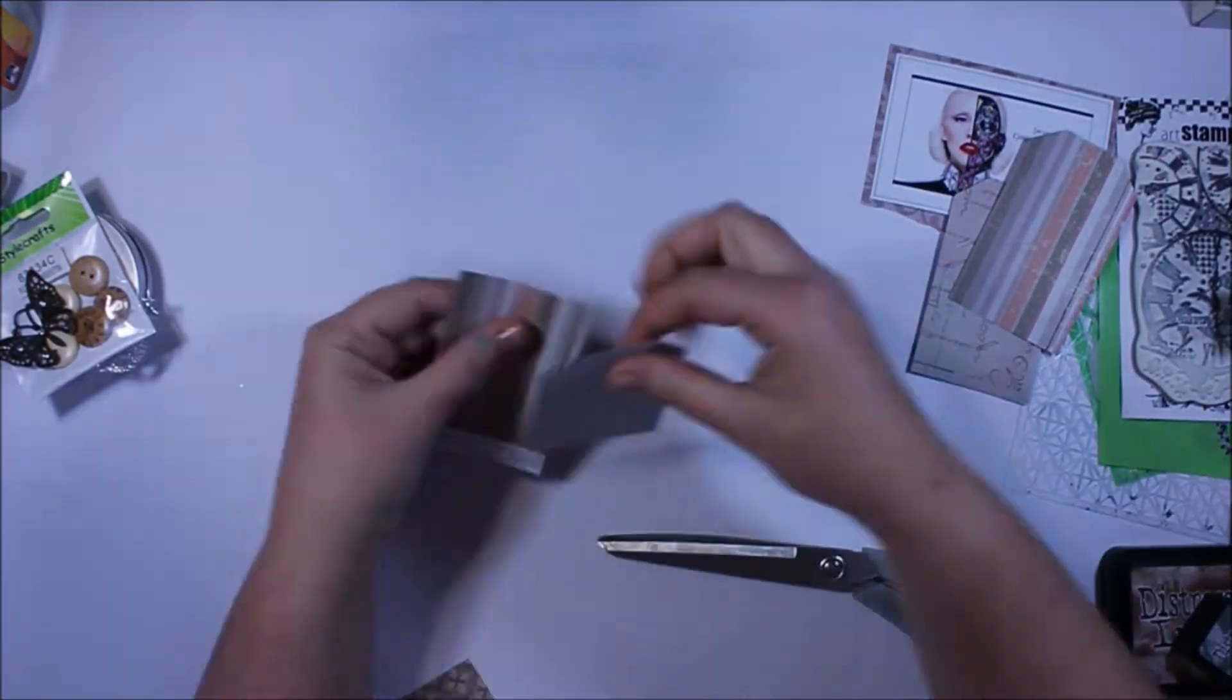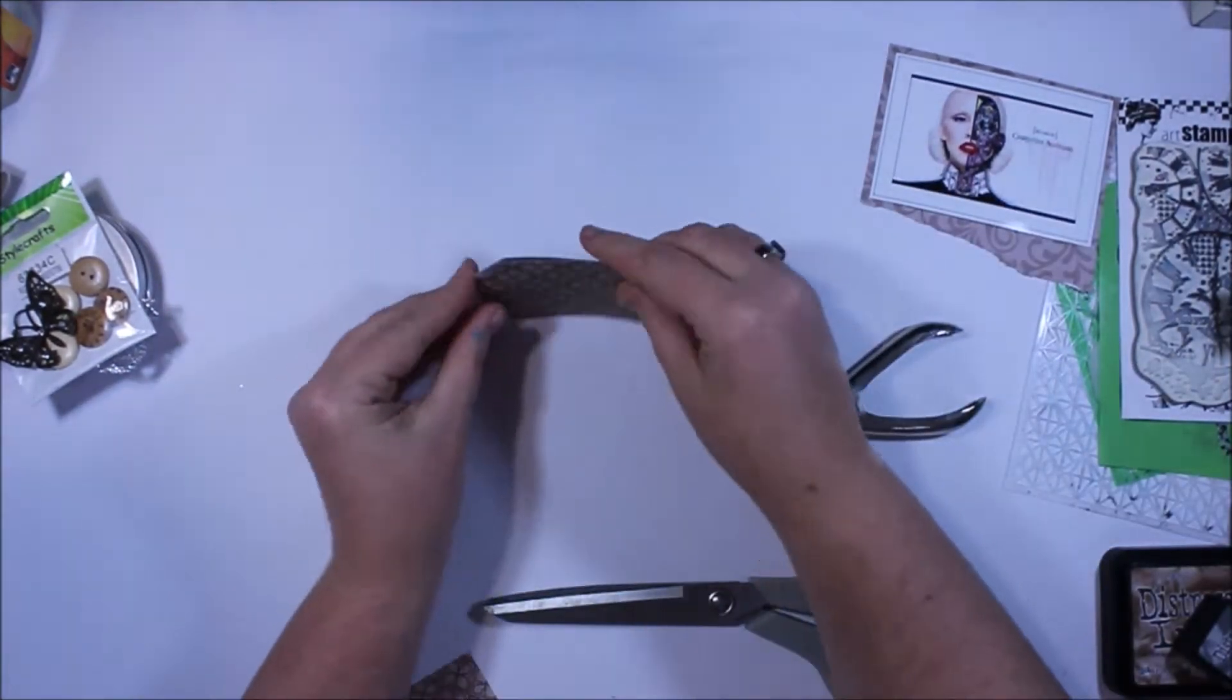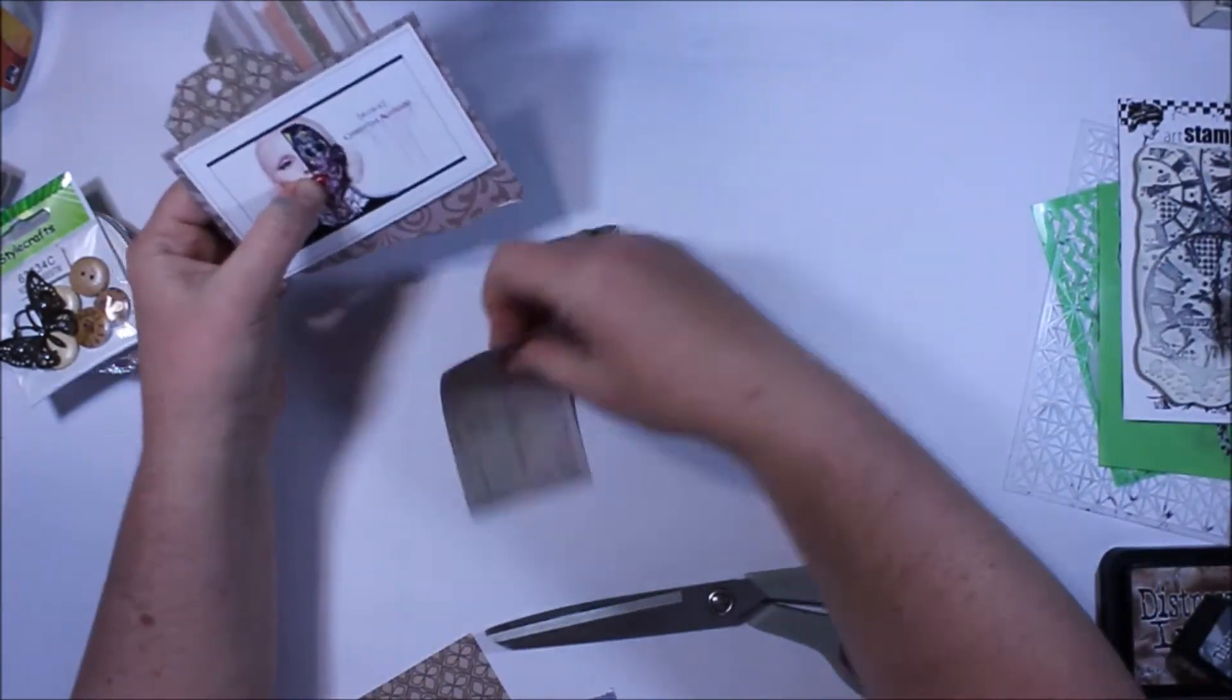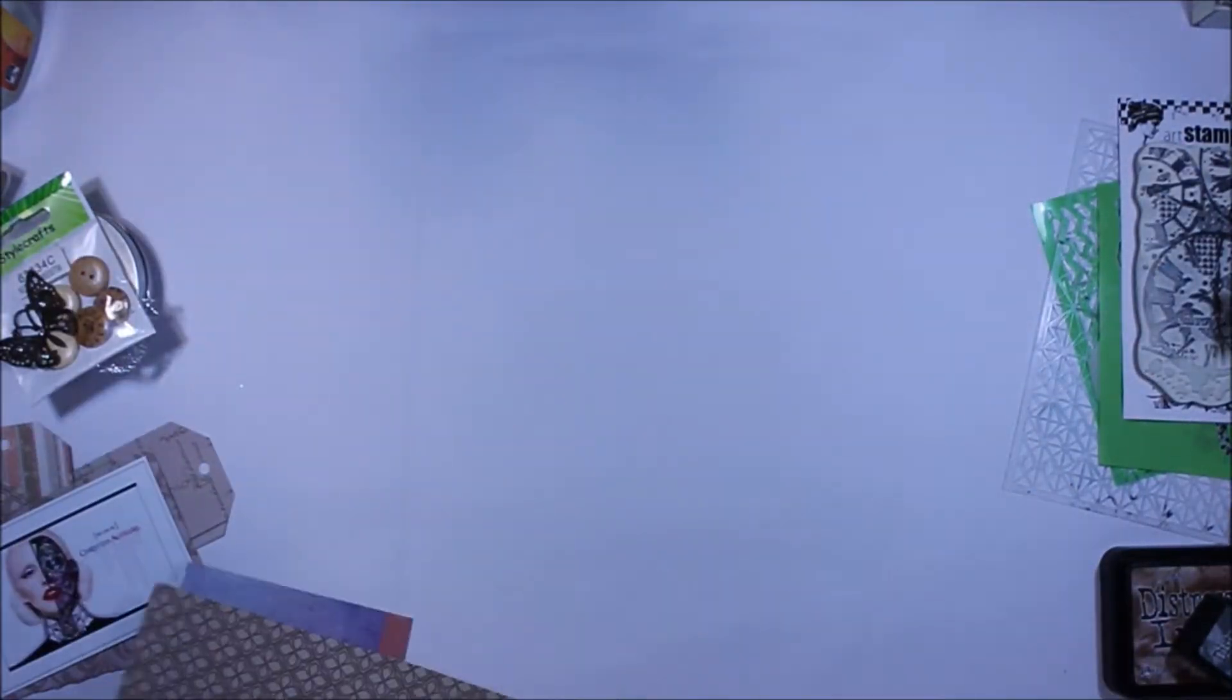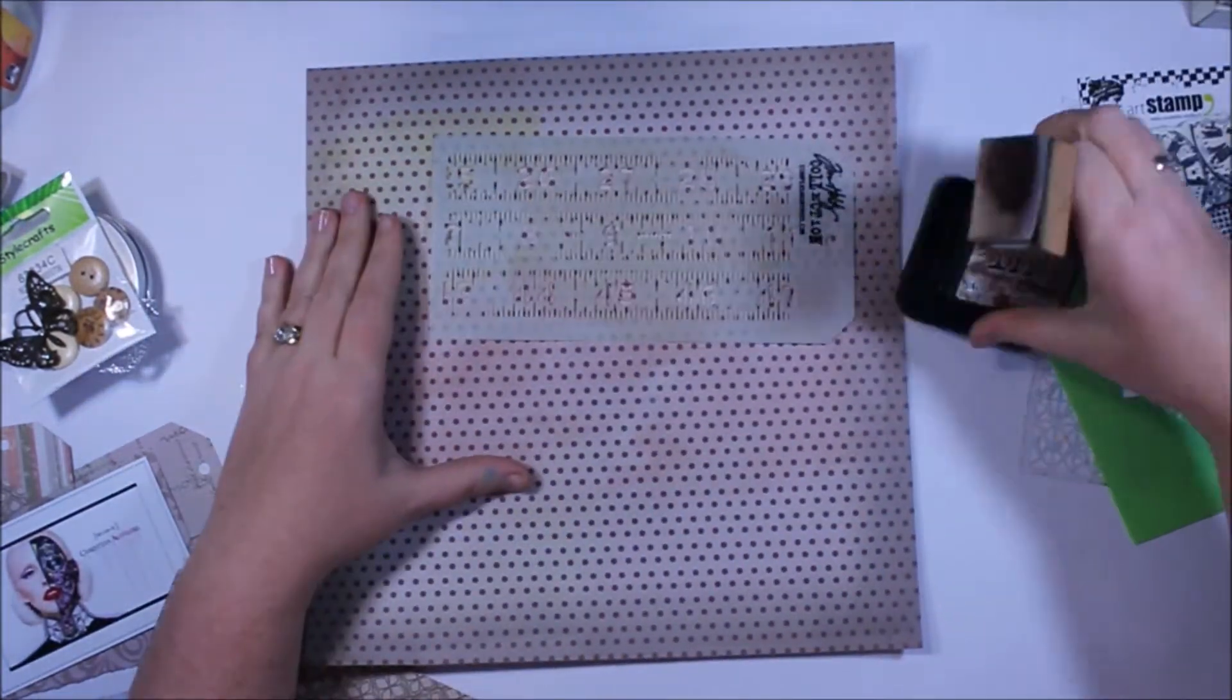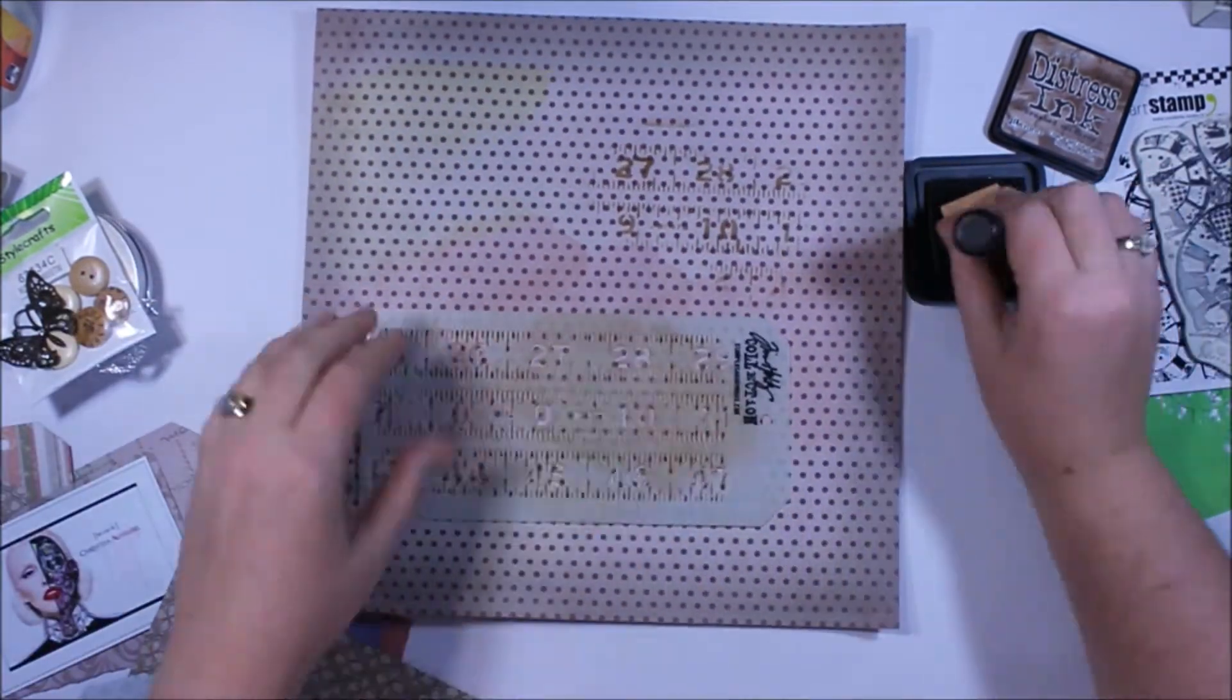So I used the favourite song inspiration to actually create this sort of steampunk layout. Now what I've done is I've taken a backing paper and I've given it a coat of clear gesso and I'm going to use this to start building some layers in the background.